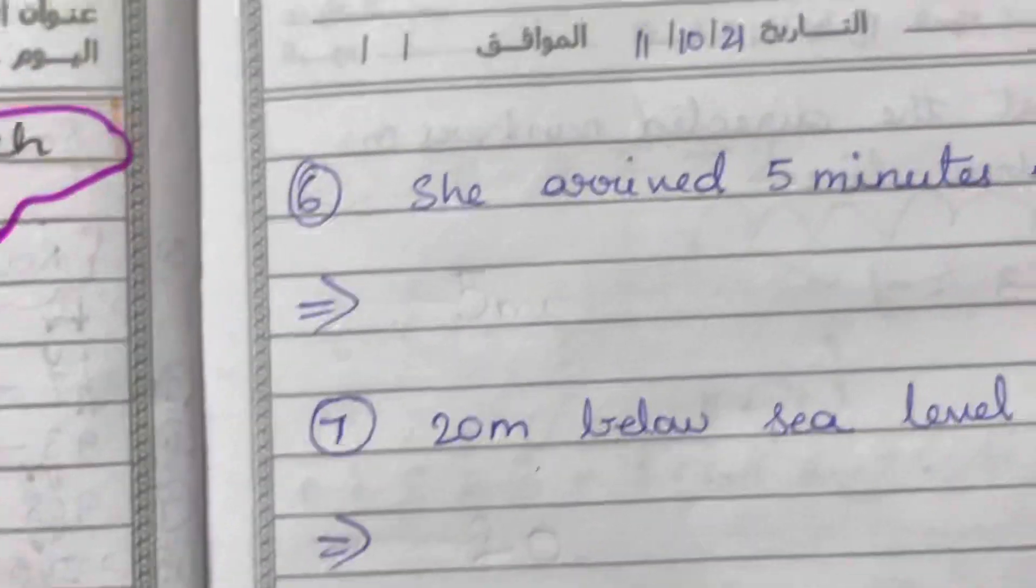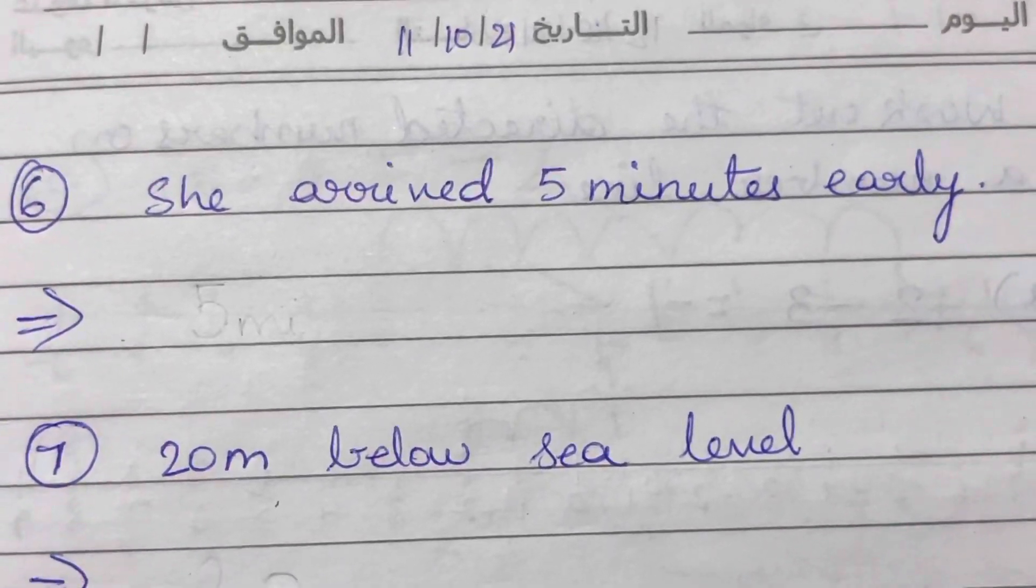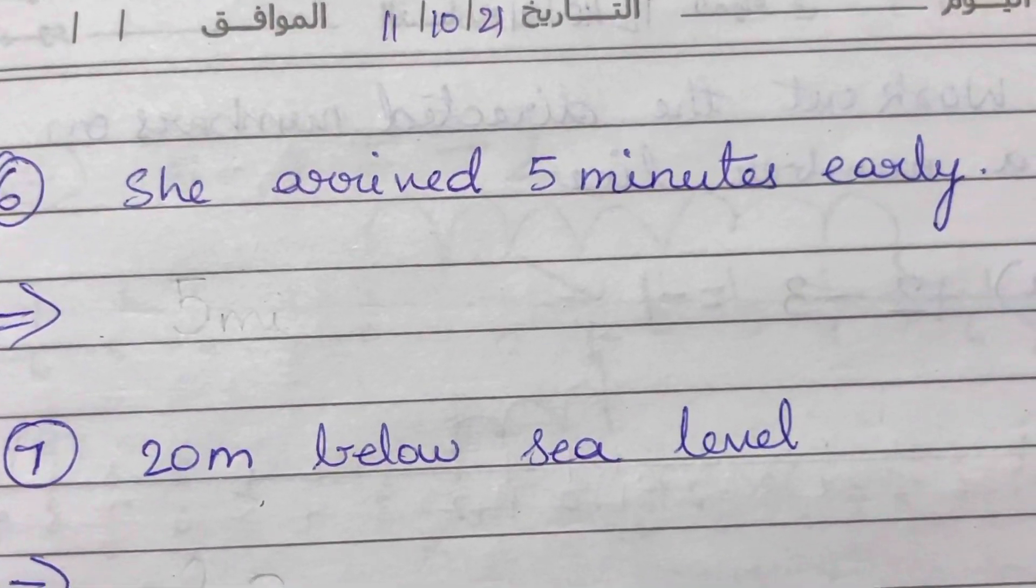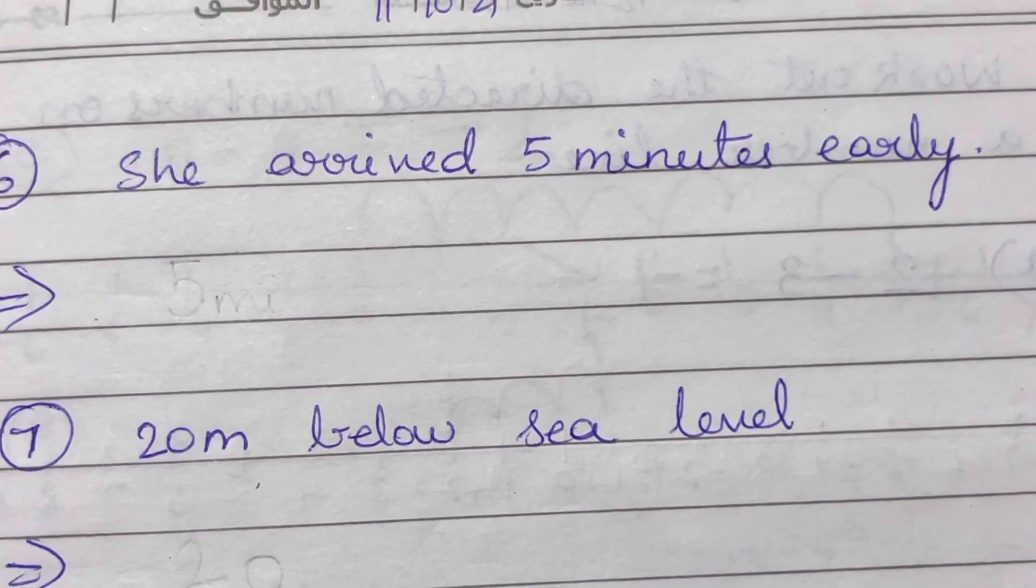Next, we have she arrived five minutes early. So whenever you're telling something like that - five minutes early - that means it was before, so you'll indicate it with a negative sign, minus five minutes.